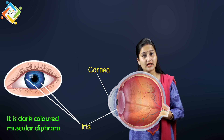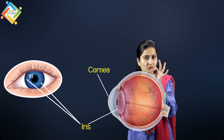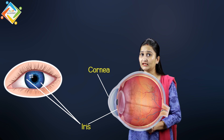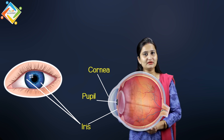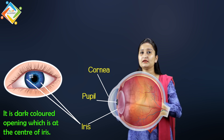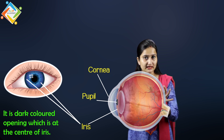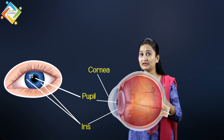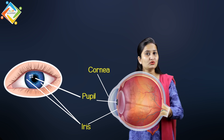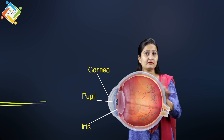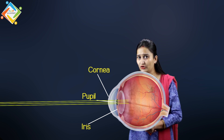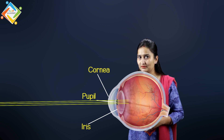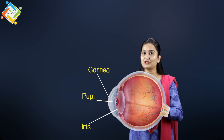If you look at the iris, you will see a black-colored opening in the center of the iris. This opening is nothing but the pupil. The pupil is a dark-colored opening formed at the center of the iris. The pupil appears dark because it does not reflect any amount of light — the light passes through the pupil and does not get reflected back.